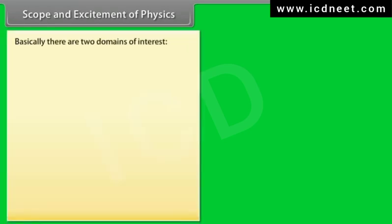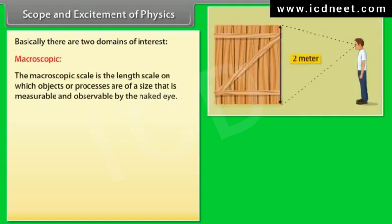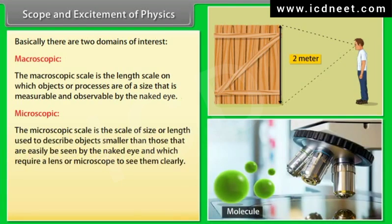Scope and excitement of physics: from a person beginning to work to communication over thousands of kilometers, physics has a very wide scope. Basically, there are two domains of interest. Macroscopic: the macroscopic scale is the length scale on which objects or processes are of a size that is measurable and observable by the naked eye. Microscopic: the microscopic scale is the scale of size or length used to describe objects smaller than those that can easily be seen by the naked eye, and which require a lens or microscope to see them clearly.